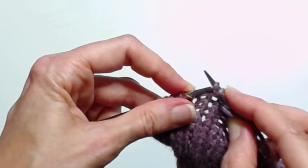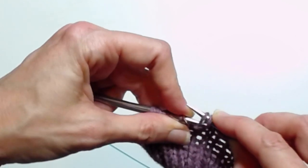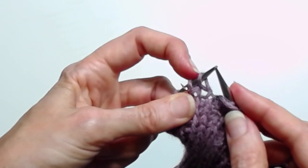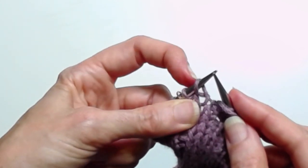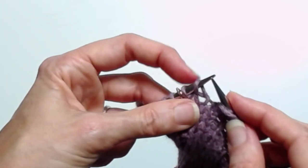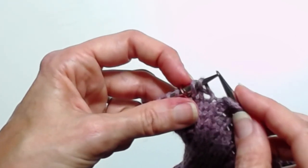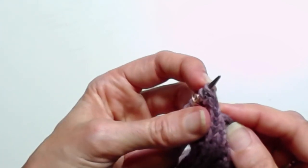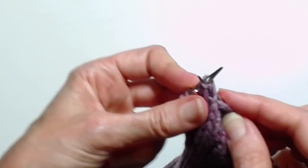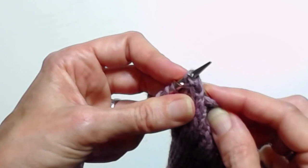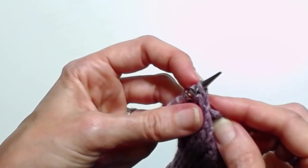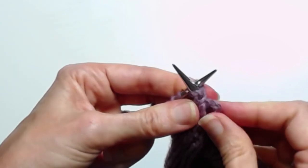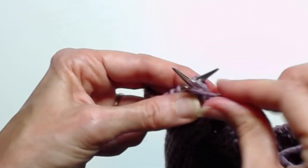And then I put them back where they came from because I now have to purl two together through the back loop, which is their leading leg, which means I have to take that needle around to the back and I have to enter the back loop of stitch number two and then stitch number one. If you have trouble doing this in one move just do it one stitch at a time.